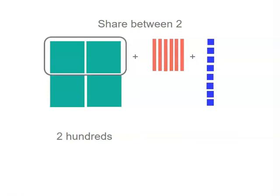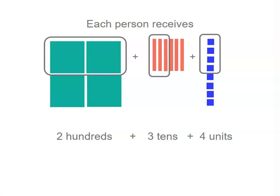If we break our hundreds into two groups, each person gets two hundreds. Our tens, each person gets three tens. And for our units, each person receives four units.